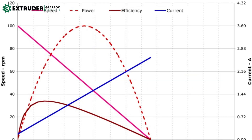Speed ratios determine the efficiency and effectiveness of your system by controlling the speed of the output component. It's essential to consider the desired output speed, available input speed, and any other constraints or requirements.